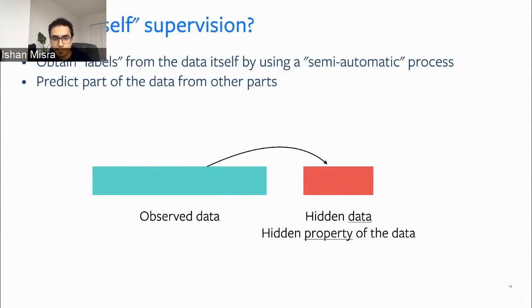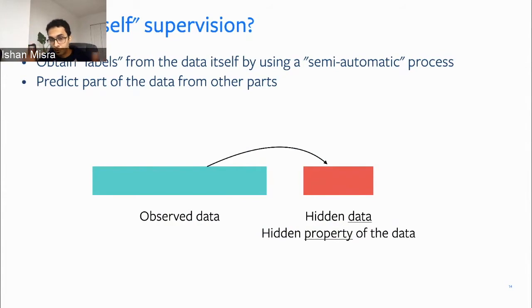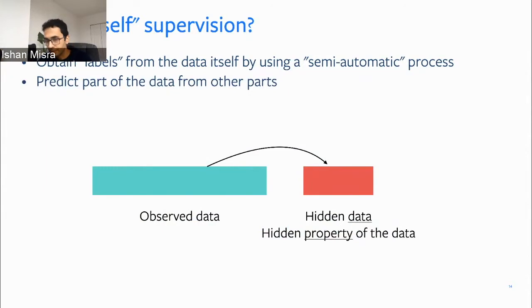So what is self-supervised learning? The idea is that you can obtain labels from the data itself by using some kind of semi-automatic process. In practice, what people do is they have some observed data and some hidden property of the data. For example, say you observe a video and only look at frames until 10 seconds — then you want to predict what happens in the future. So you set up this proxy problem where you know the answer, and you can get more and more labels for free as the data comes in.